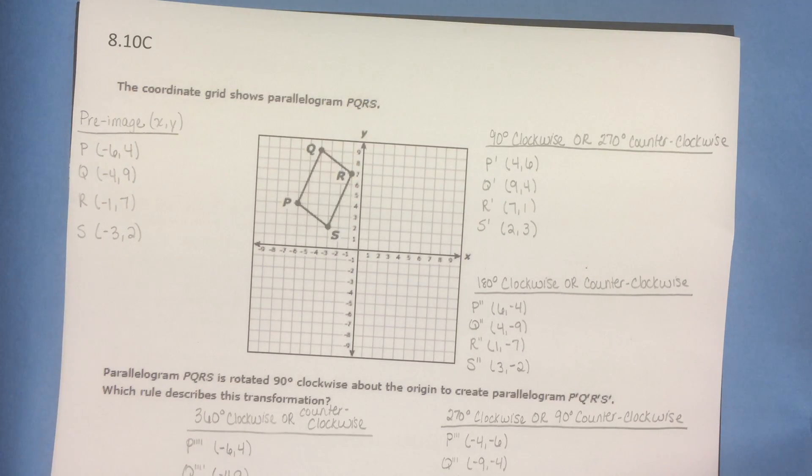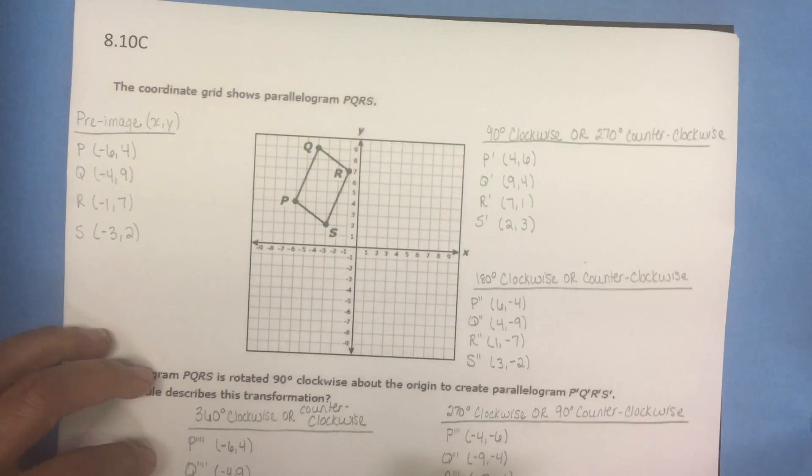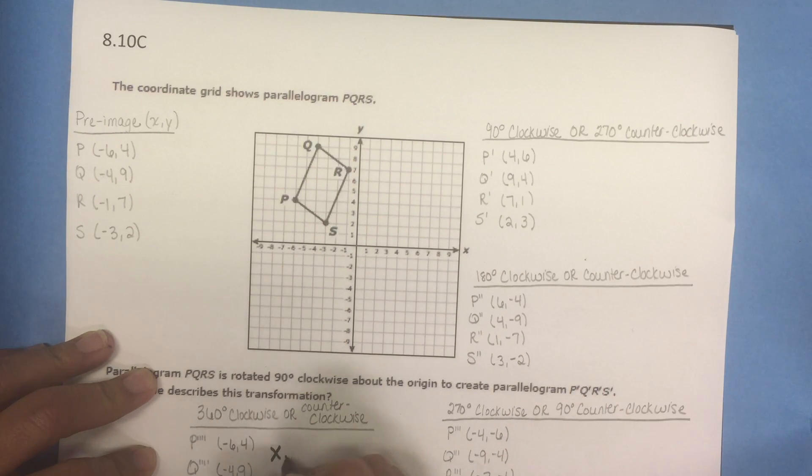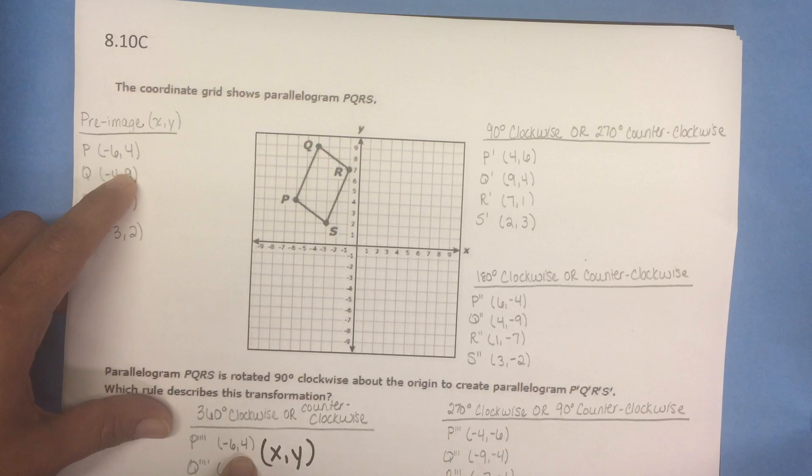So now let's think about algebraic representations. Let's talk about the 360 degree first. If we rotate a figure 360 degrees in either direction, the coordinates are gonna be the same because you're gonna end right where you started from.